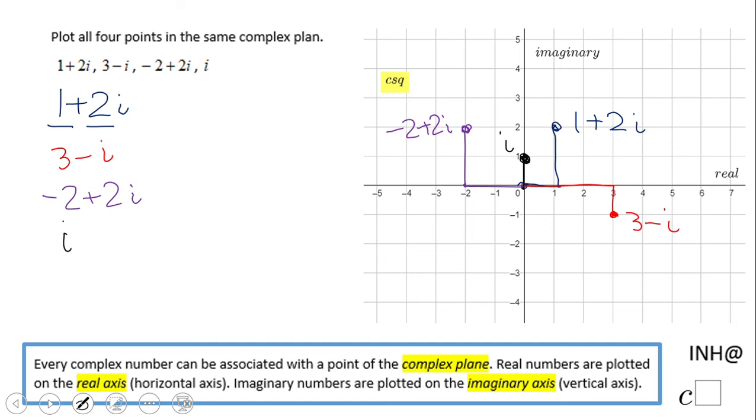On that vertical axis, you're going to have imaginary points, or on the real axis you're going to have real numbers. If you enjoyed this, don't forget to click the like button and come back to C Squared for more help. Thank you.